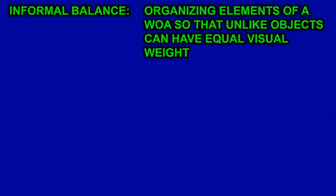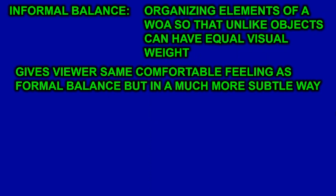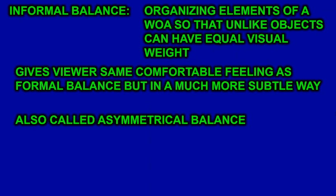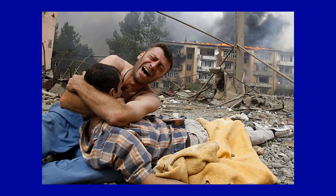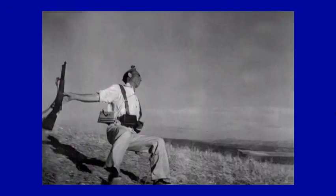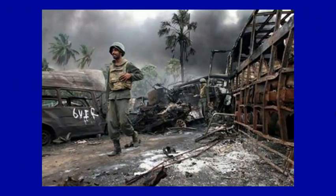Informal balance is organizing elements of a work of art so that unlike objects can have equal visual weight. It gives the viewer the same comfortable feeling as formal balance but in a much more subtle way. It's also called asymmetrical balance and creates a more casual effect. In one example, a boy's face is over on the right side, not near the center at all, but his face is balanced by the figures on the left. In another — a famous photograph from the Spanish Civil War — the drama happening on the left is balanced by the destruction on the right. It's definitely asymmetrical, with all the energy and subject matter on the left side. The soldier is balanced by the complicated shapes on the right.